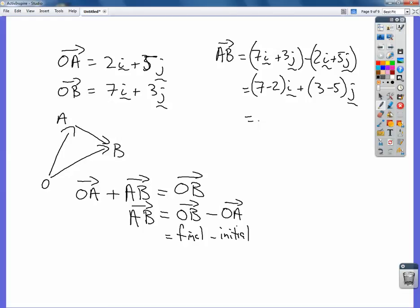And that gives me 5i minus 2j. So there's my vector from A to B.